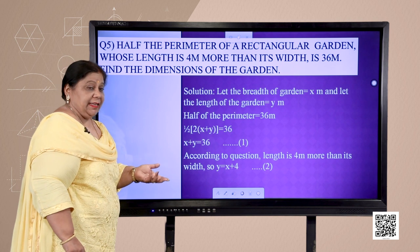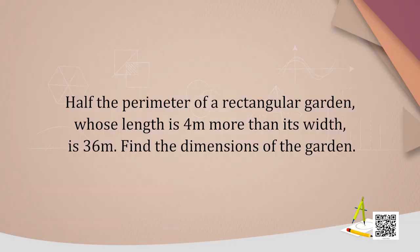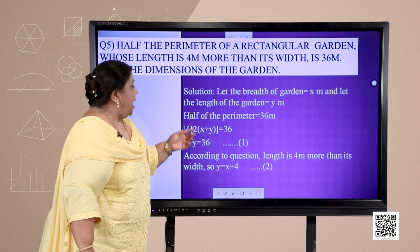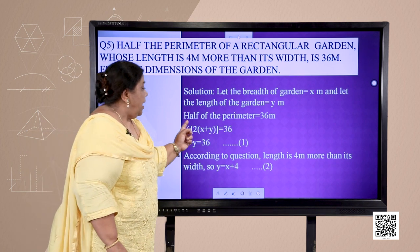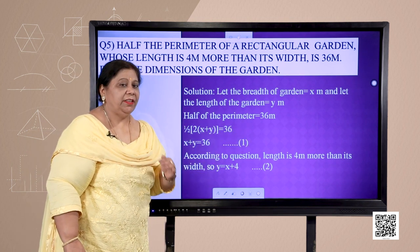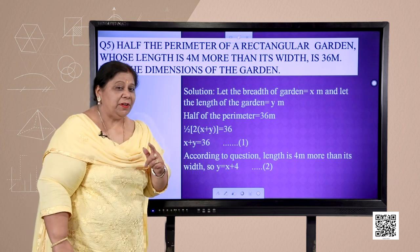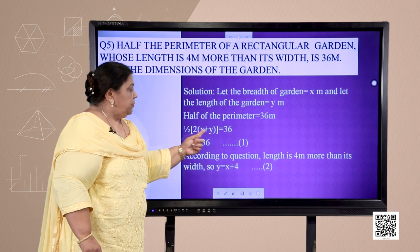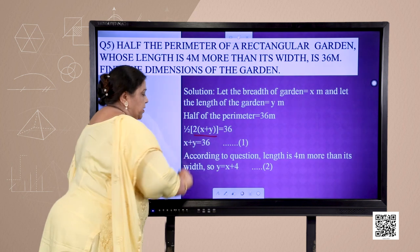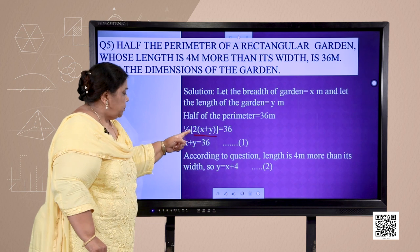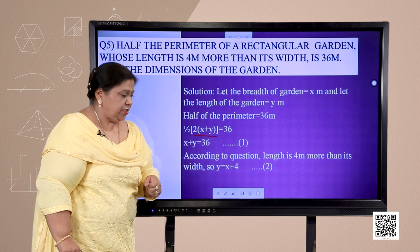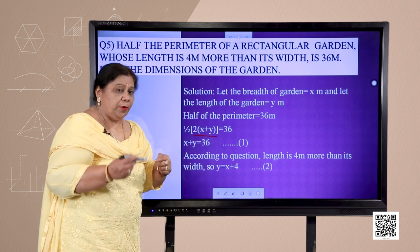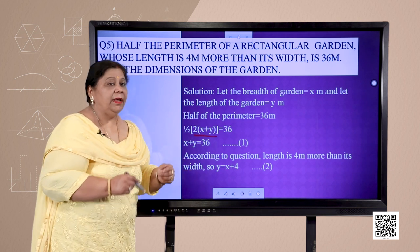Let us look into the next question: half the perimeter of a rectangular garden, whose length is 4 meters more than its width, is 36 meters. Find the dimensions of the garden. Let the breadth of the garden be x meters and the length be y meters. Half the perimeter is 36 meters. Using the perimeter formula: half of 2(l + b) = 36, so x + y = 36. This is our first equation. According to the question, length is 4 meters more than the width, so y = x + 4. This is our second equation.